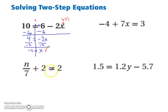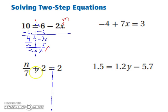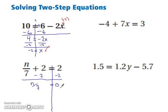Let's try one more together, and then you can try the two on the right on your own. We're going to draw our line and undo addition and subtraction first. So we're going to subtract two from both sides of the equation, which leaves us with n divided by seven equals zero. We have division, and the inverse operation of division is to multiply, so we're going to multiply both sides by seven.